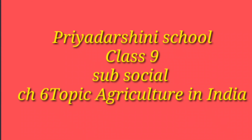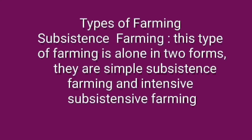India is an agricultural country. In this chapter, we are going to discuss about the types of farming in our country. Depending upon the characteristics of physical environment, technological and socio-cultural practice, at present the farming system has totally changed.